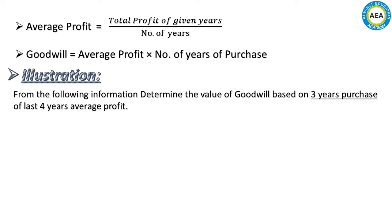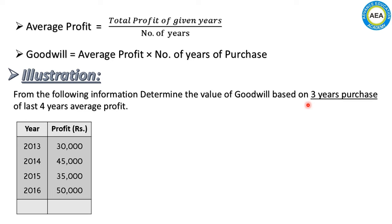From the following information, determine the value of goodwill based on three years' purchase of last four years' average profit. The number of years of purchase is three years. The profits for the respective years are: 2013 — ₹30,000; 2014 — ₹45,000; 2015 — ₹35,000; 2016 — ₹50,000.